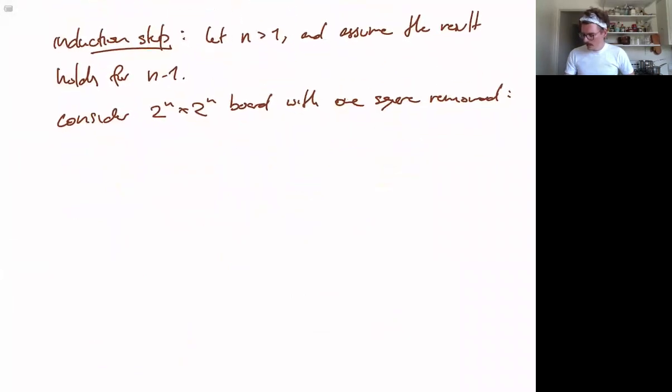So let's draw some kind of picture of that. It's going to look something like this. And let's say there is some square removed somewhere. So how are we going to prove this by induction? How are we going to use this inductive step?